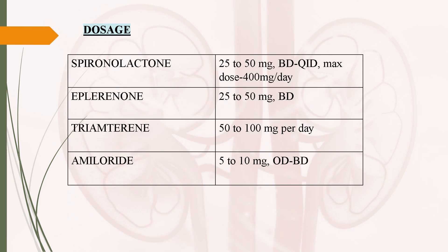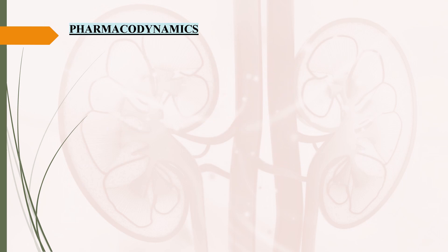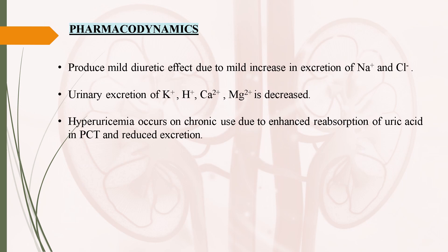These are the dosage forms of different potassium-sparing diuretics. Coming to pharmacodynamics: all these drugs produce a mild diuretic effect due to mild increase in excretion of sodium and chloride ions. Urinary excretion of potassium, hydrogen, calcium, and magnesium ions is decreased. Hyperuricemia occurs on chronic use due to enhanced reabsorption of uric acid in the PCT and reduced excretion.